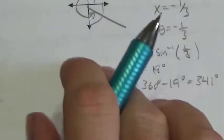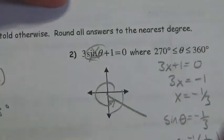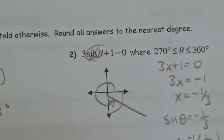The fourth quadrant angle is going to be 360 degrees minus that 19 degrees, which ends up being 341 degrees. That's the angle we're looking for. This one had a small equation we had to solve first before we could get to the answer.